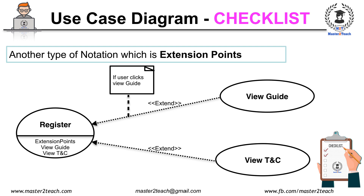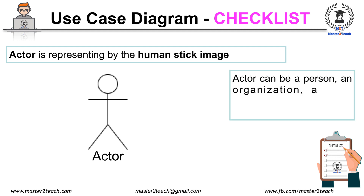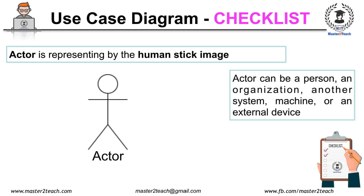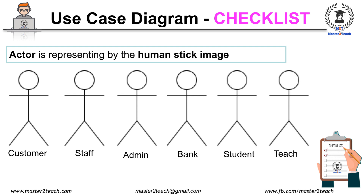The actor is represented by a humanistic image. Anyone who performs certain functions in a system is an actor. An actor may be a person, an organization, another system, machine, or any external device. So whoever or whatever uses our system is an actor — like customer, staff, admin, bank, student, teacher, etc. Make sure to represent all actors with a humanistic image, even for machines and external devices, and the diagram should contain at least more than one actor.